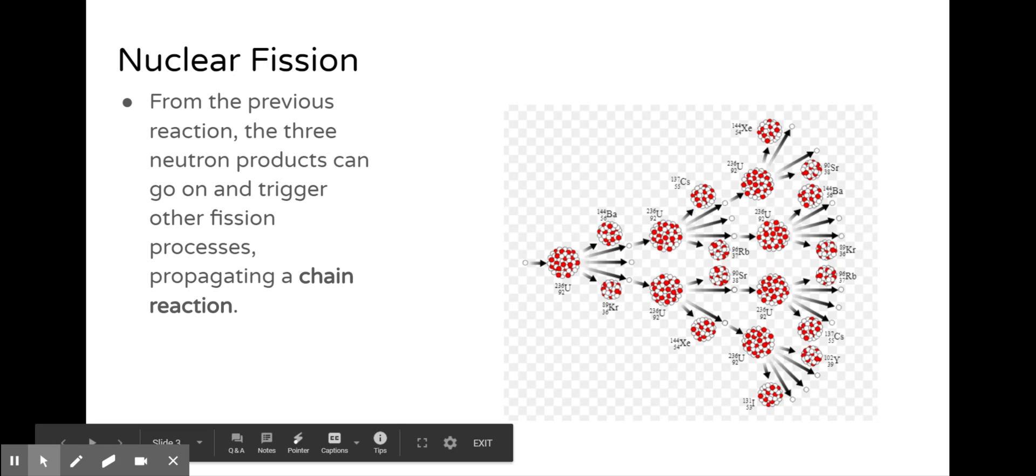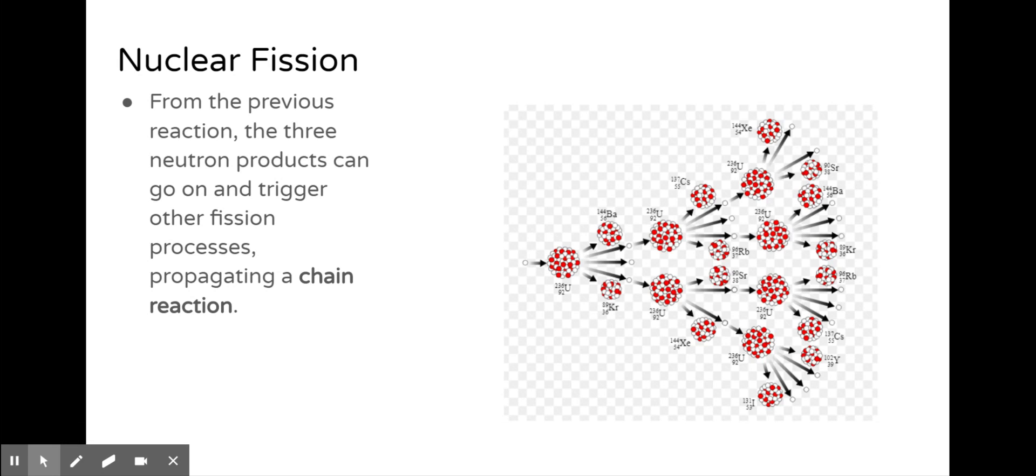Nuclear fission can propagate a chain reaction. So those three neutrons that are produced from a fission reaction can then propagate and hit three more isotopes, causing that to create a chain reaction, which is exactly what happens in a nuclear reactor.